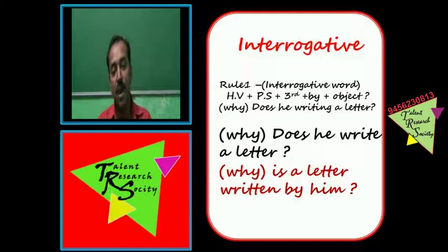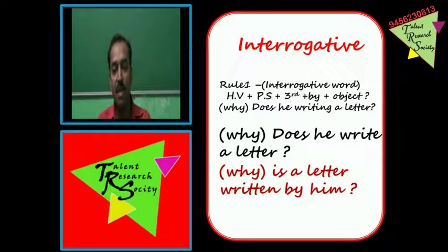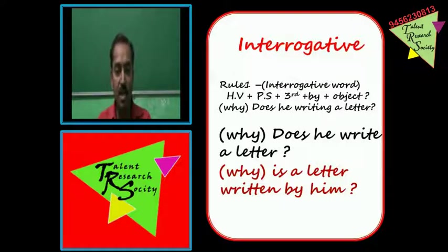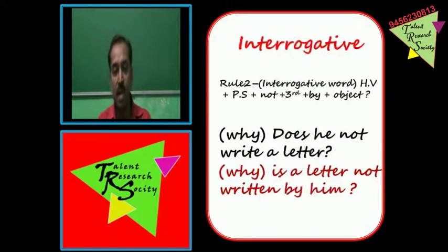Interrogative Rule 1 ko apply karte hain. Rule 1: Interrogative word + helping word + PS + third form + by + object. Example: 'Why does he write a letter?' Passive mein: interrogative word 'why' ka 'why', helping word 'is' (present indefinite), object 'a letter', third form 'written', by, subject ka object 'him'. Sentence hoga: 'Why is a letter written by him?'